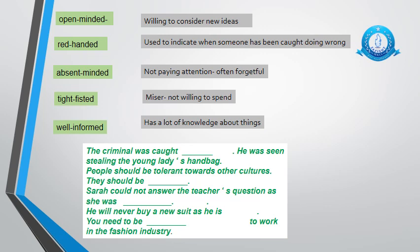Absent-minded — think of being absent, not being present, and then think of your mind. So not paying attention. Students are absent-minded; I'm absent-minded when I'm cooking sometimes — my mind wanders somewhere else. Often forgetful. Tight-fisted — think of your fist and literally squeeze it, make it into a little ball. That's what people do when they're not willing to spend — so you're like a miser, you don't want to spend money. Well-informed — informed means when you know about things, and well is a good thing. So basically you have a lot of knowledge and information about things.